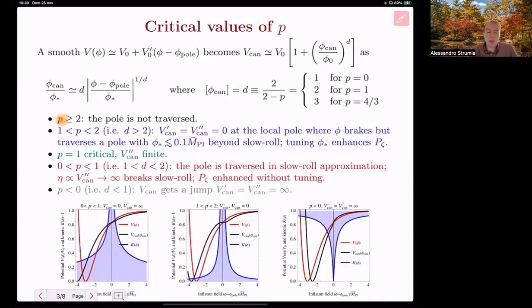If the power is bigger than 2, meaning canonical dimension of the field around the pole infinite, the pole is not traversed.